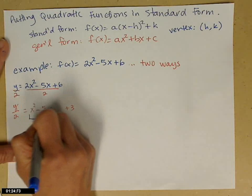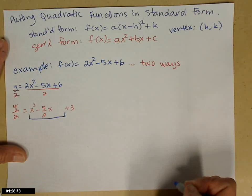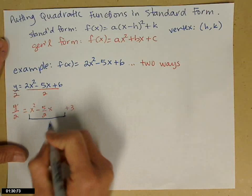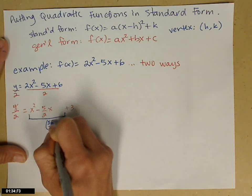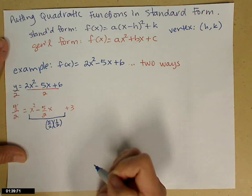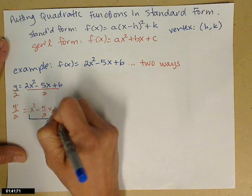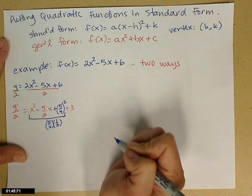Remember completing the square? I need to force a perfect square trinomial in right there. So I take my x coefficient, 5 halves. I know it's negative, but I'm squaring things so it goes away. Then I need half of that. So half of 5 halves is 5 fourths. Then I'm going to square it and add it inside there.